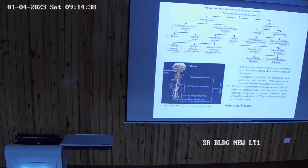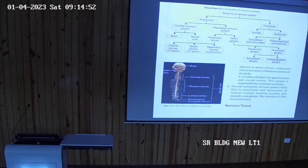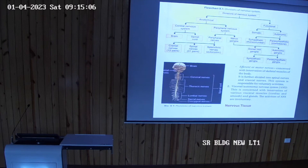The second type is the peripheral nervous system. We classify the nervous system into central nervous system and peripheral nervous system. The central nervous system consists of the brain and spinal cord. The peripheral nervous system consists of peripheral nerves and nerve ganglia.